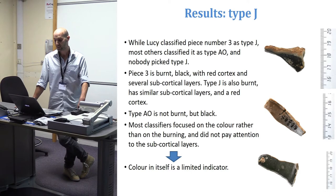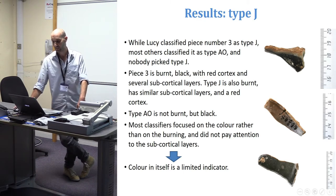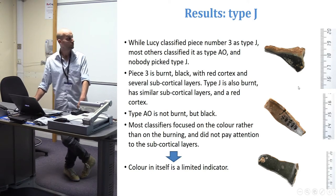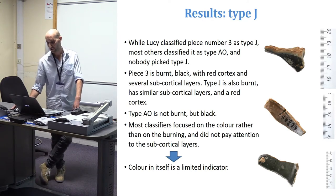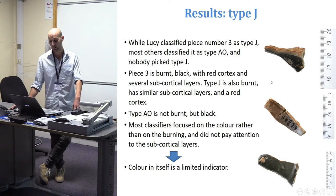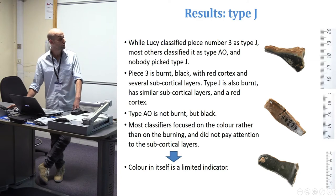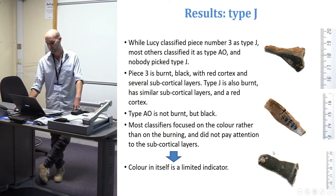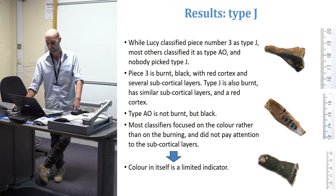The final example is a case where I got it wrong along with everybody else. Lucy classified piece number three as Type J, while most others classified it as Type AO, and nobody else picked Type J. Piece three is burnt black with red cortex and several subcortical layers. Type J is also burnt — the variation in color results from different degrees of burning — and has similar subcortical layers and red cortex. Type AO is not burnt but simply black in color and lacks subcortical layers. Most classifiers focused on color rather than the burning state and did not pay attention to the subcortical layers, suggesting that color alone is a limited indicator in classifying raw materials.